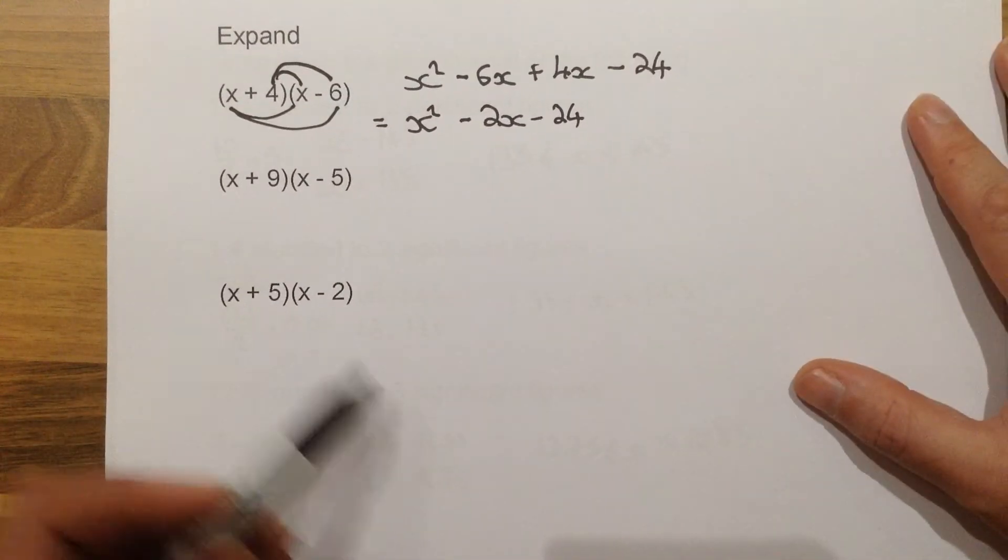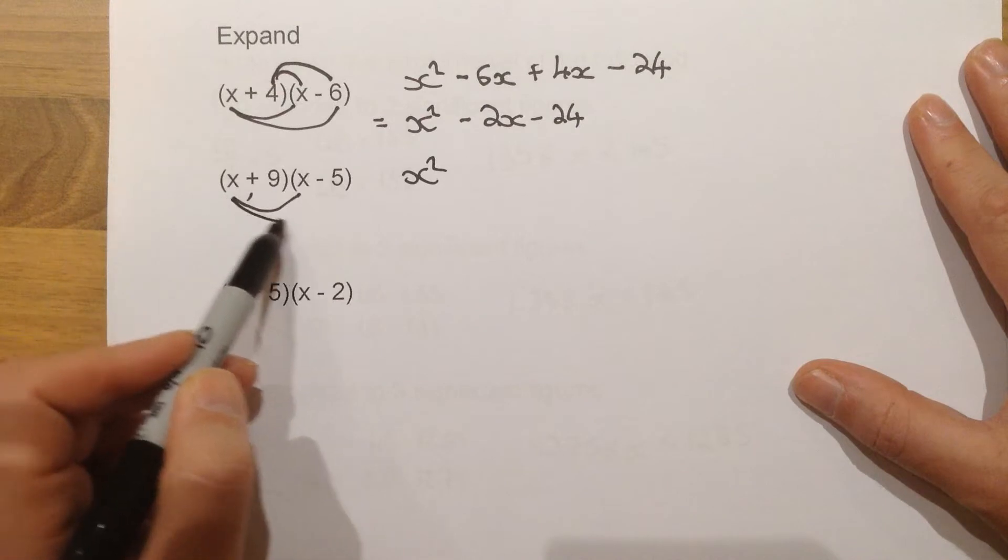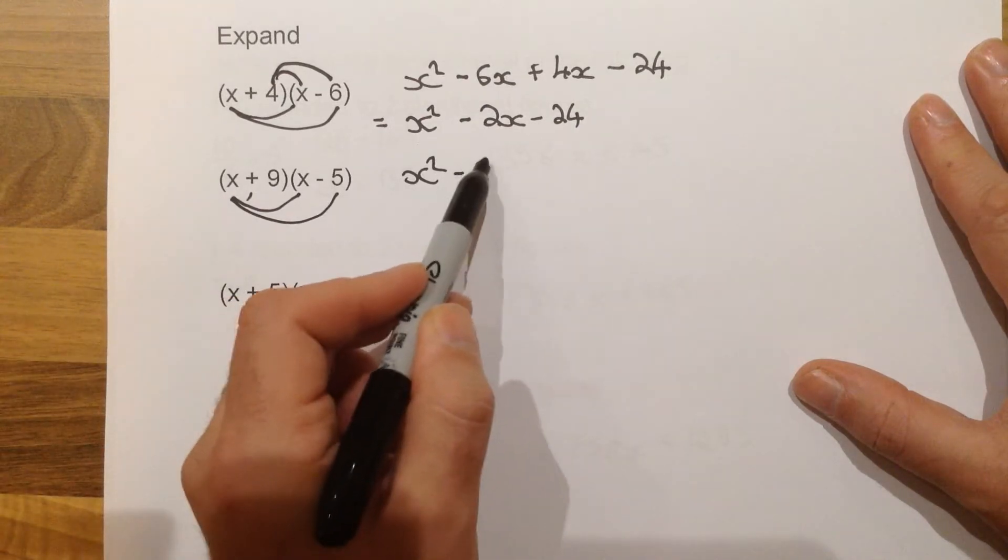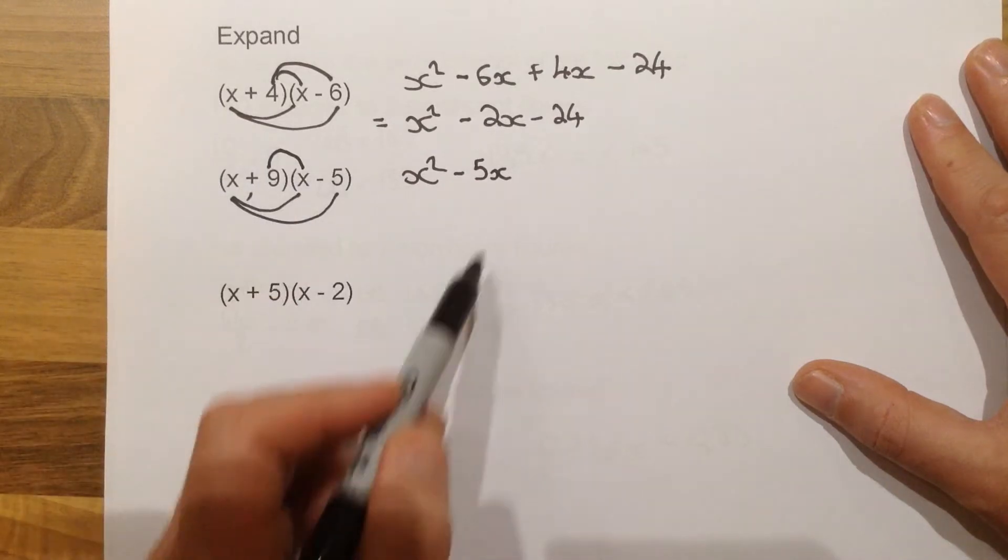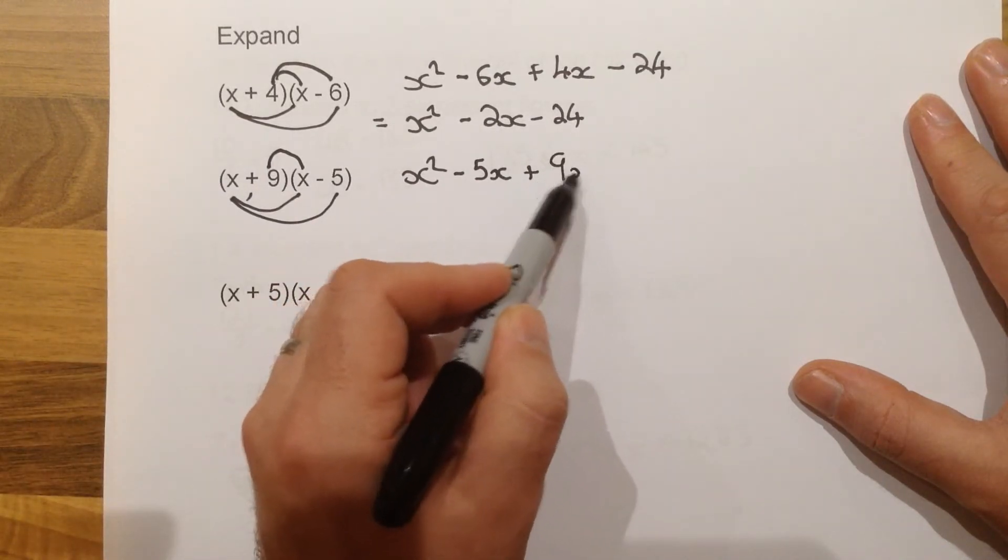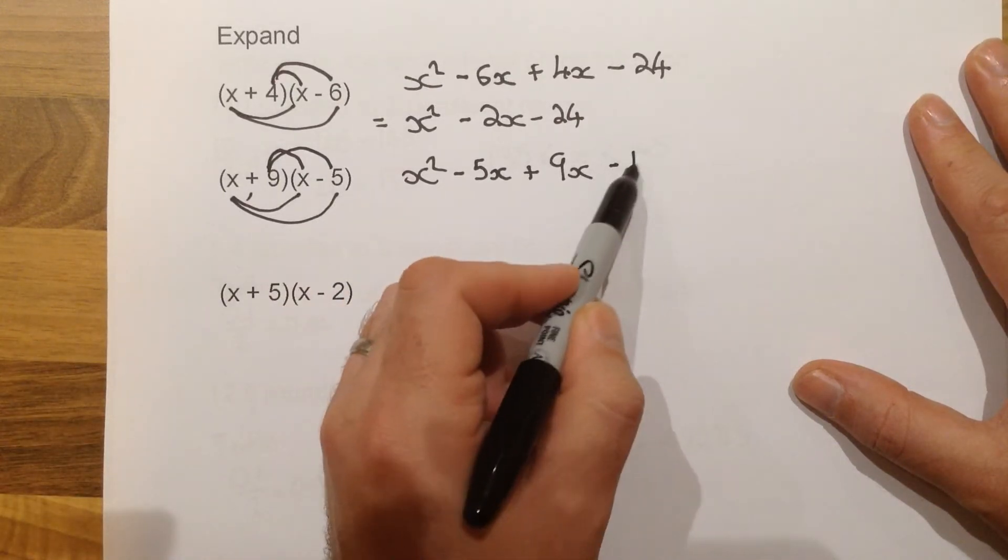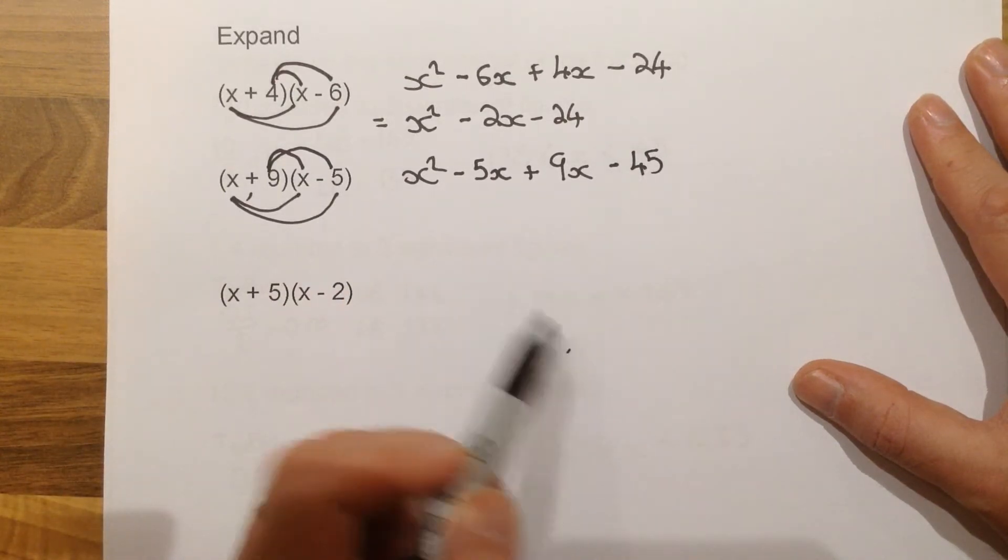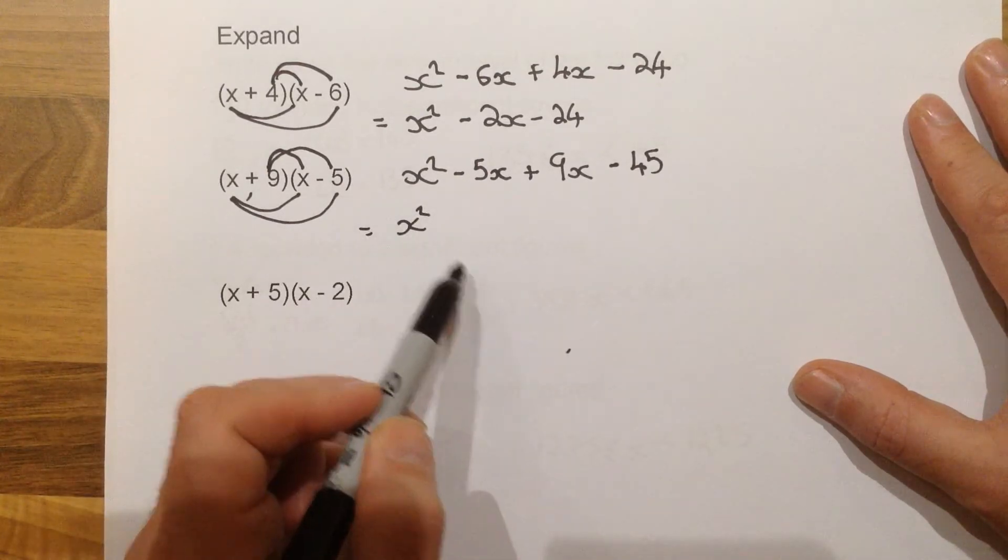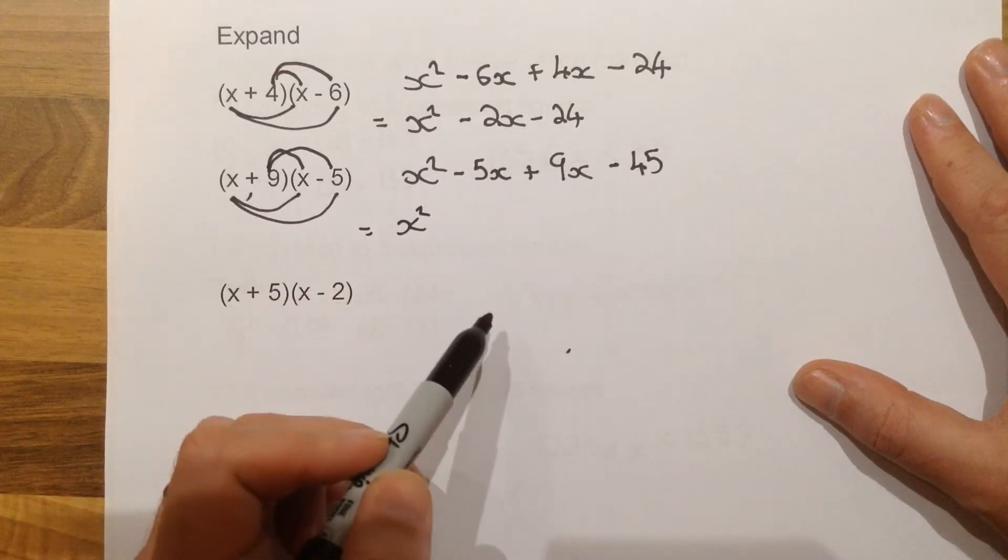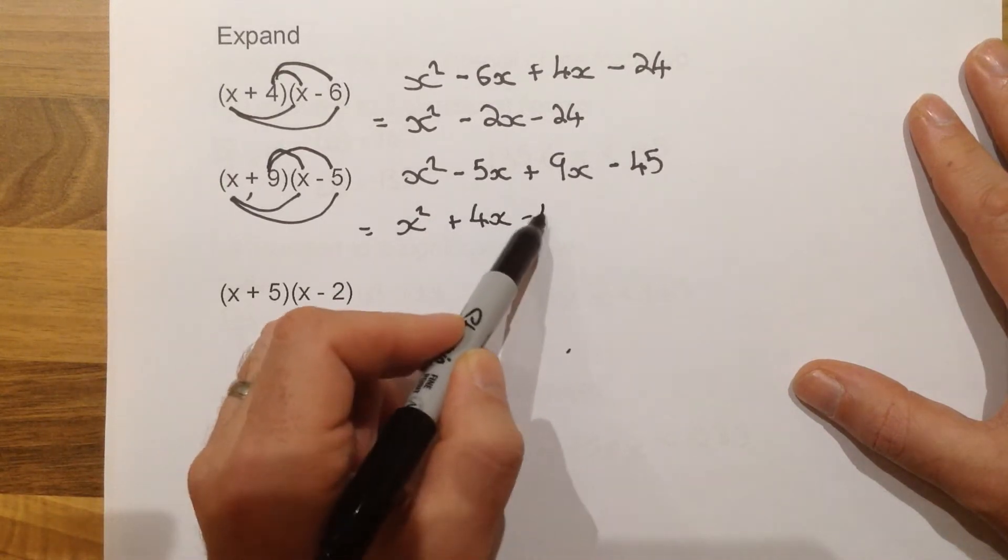Same idea for the next one. X squared. X times minus 5, so minus 5X. Positive 9 times X, so plus 9X. And then positive 9 times minus 5, which is minus 45. Simplifying, as we did before, that would give us X squared. Minus 5 plus 9 takes us up to plus 4X. And then minus 45.